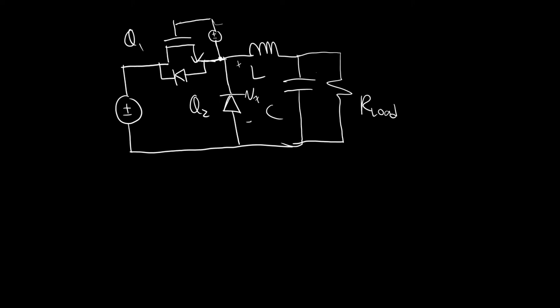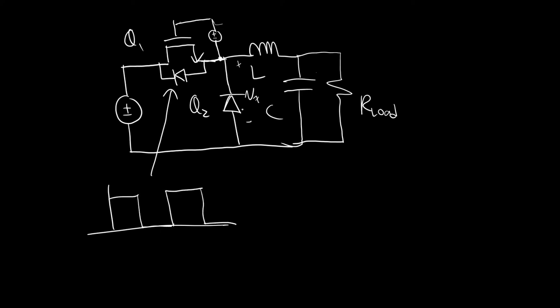Exactly one switch in this two-switch circuit is controlled — we have control just by turning this single switch on and off, and that's all the control we need. The diode responds naturally: when the MOSFET turns on, you reverse-bias the diode. When the MOSFET turns off, the current through the inductor forces the diode to turn on.